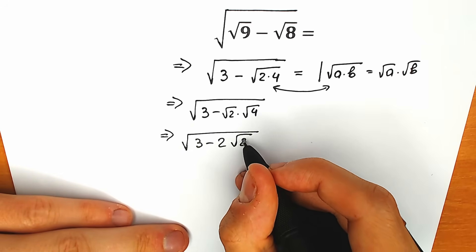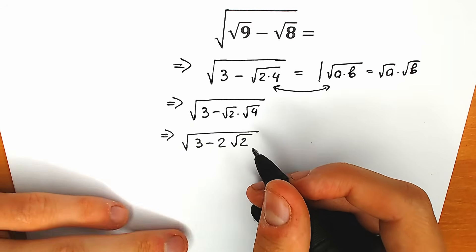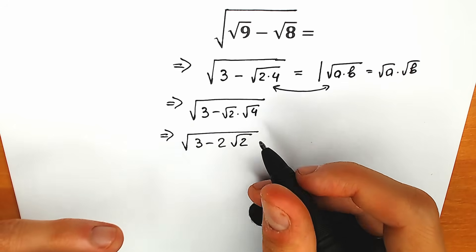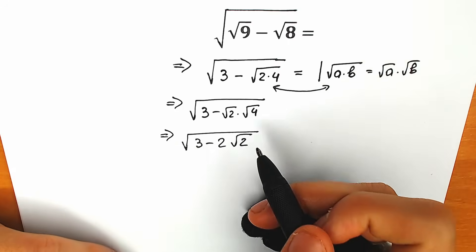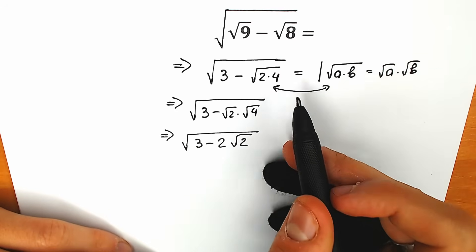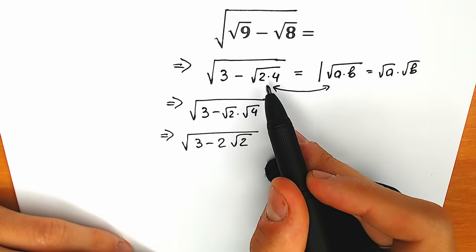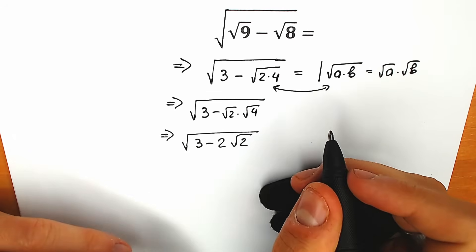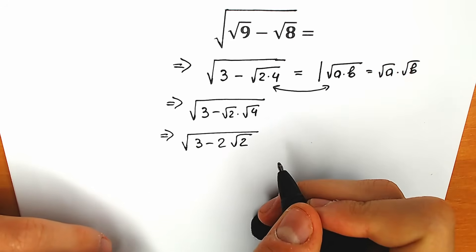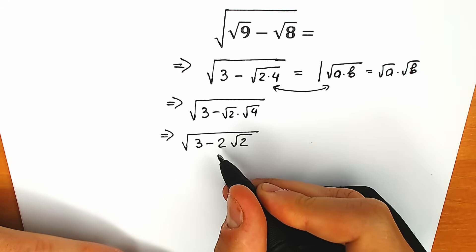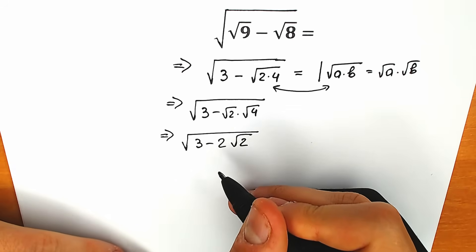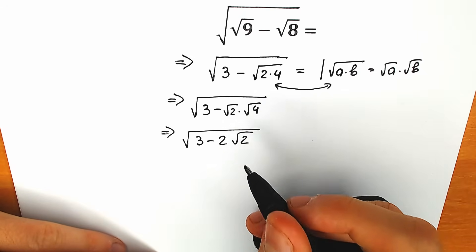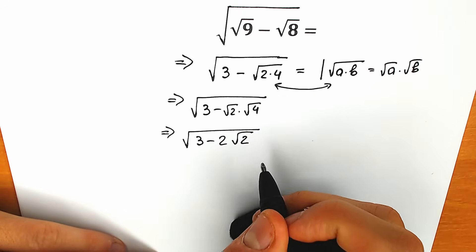This looks like our maximum simplification — we can't simplify it more directly. So what are we going to do next? The best way to solve this from here is to create a perfect square inside the square root sign.